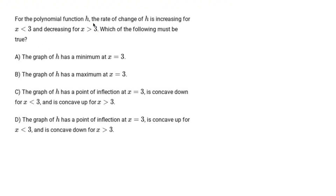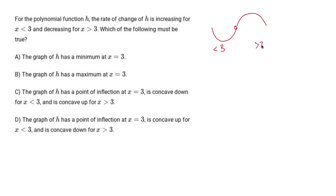For the polynomial function h, the rate of change of h is increasing for x less than 3 and decreasing for x greater than 3. The rate of change increasing implies concave up, and once we hit 3, it changes to the rate of change decreasing, which implies concave down. Since this transition happens at x equals 3, we have what's called an inflection point.